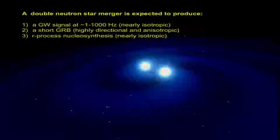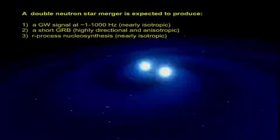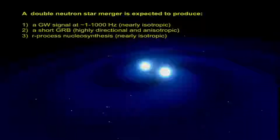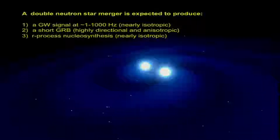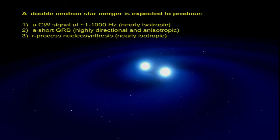My talk will be on the gravitational event of summer last year. A lot of material has already been presented, so I will elaborate in particular on the multi-wavelength electromagnetic counterpart. We know that these double neutron star mergers have three predictable outcomes: a gravitational signal in the 1 to 1 kHz range, which is approximately isotropic; a short gamma-ray burst, which is thought to be highly anisotropic; and r-process nucleosynthesis.